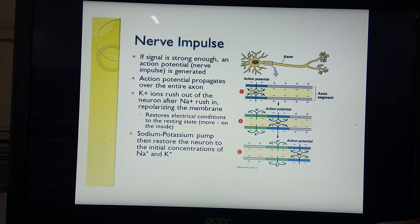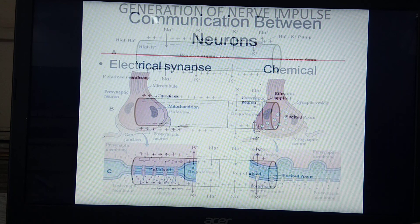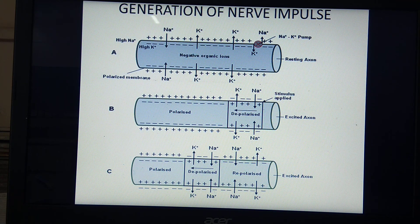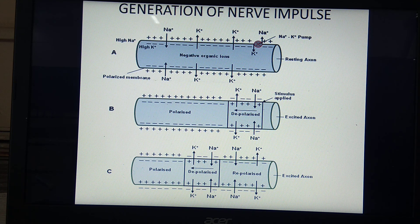In this lecture, we have studied generation of nerve impulse with three steps: polarization, depolarization, and repolarization. Lectures 3 and 4 should be seen in continuation for proper understanding. We will continue the next part of the topic — human nervous system — in the next lecture.